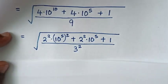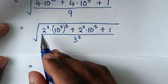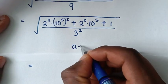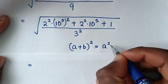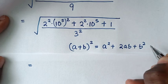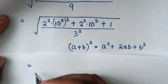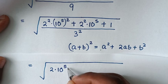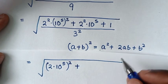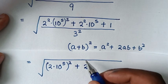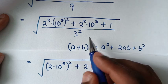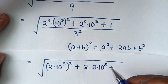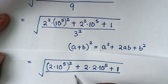In the next step, the numerator will be made into a perfect square using the expansion (a + b)² = a² + 2ab + b². So we write it as: (2 times 10 to the power of 5)² — that is a squared — plus 2 times 2 times 10 to the power of 5 — that is 2ab — plus 1 squared — that is b squared — all over 3 squared.